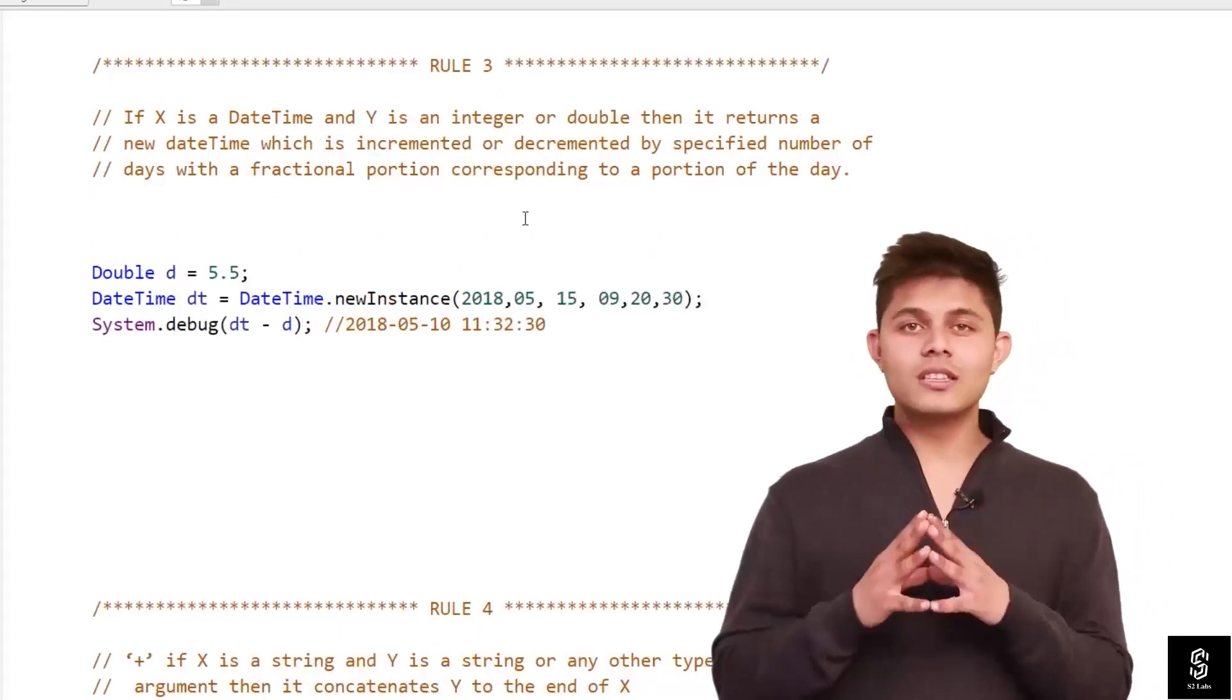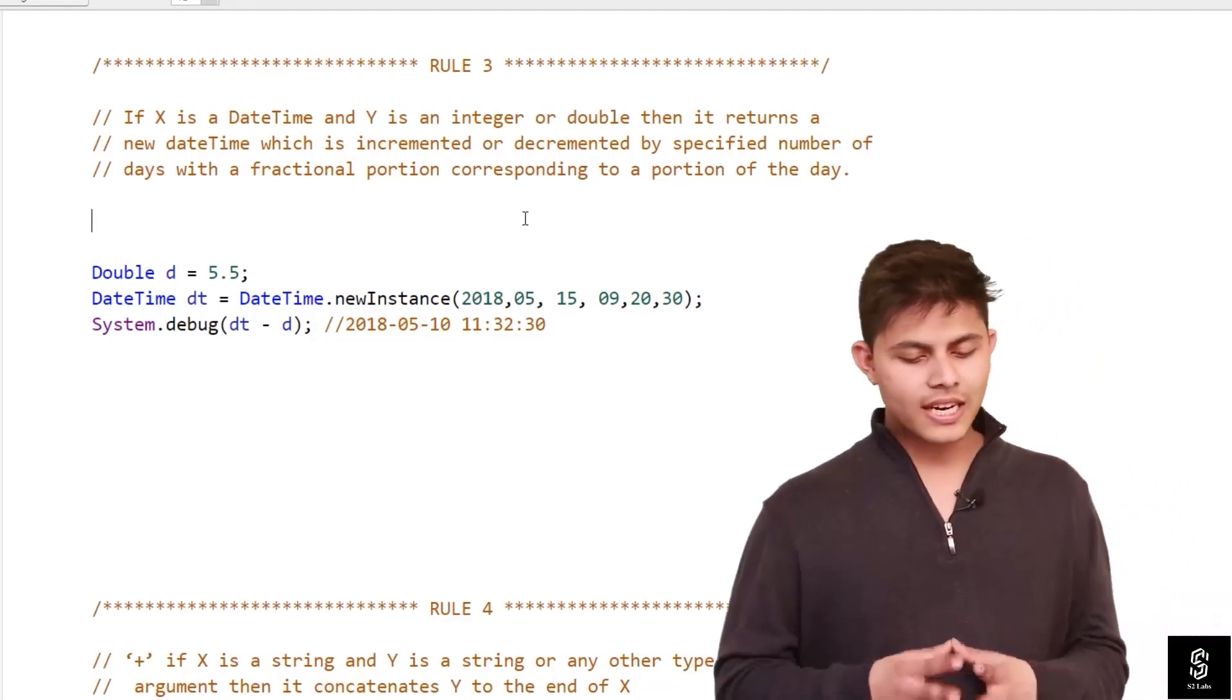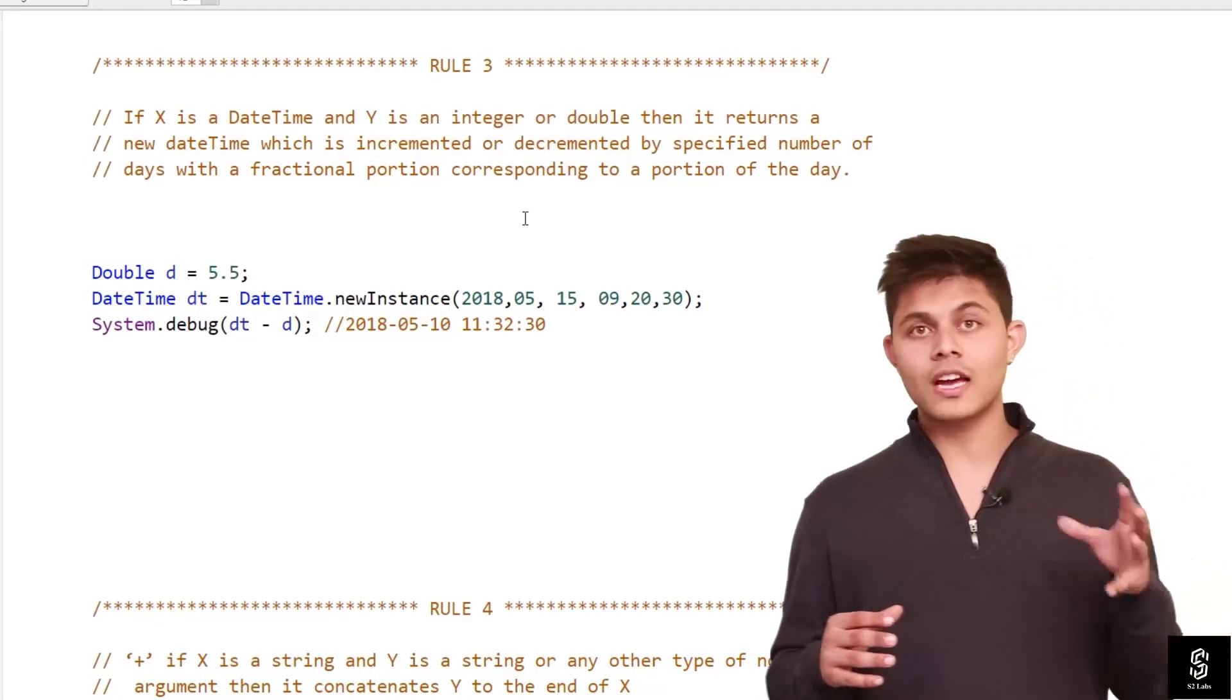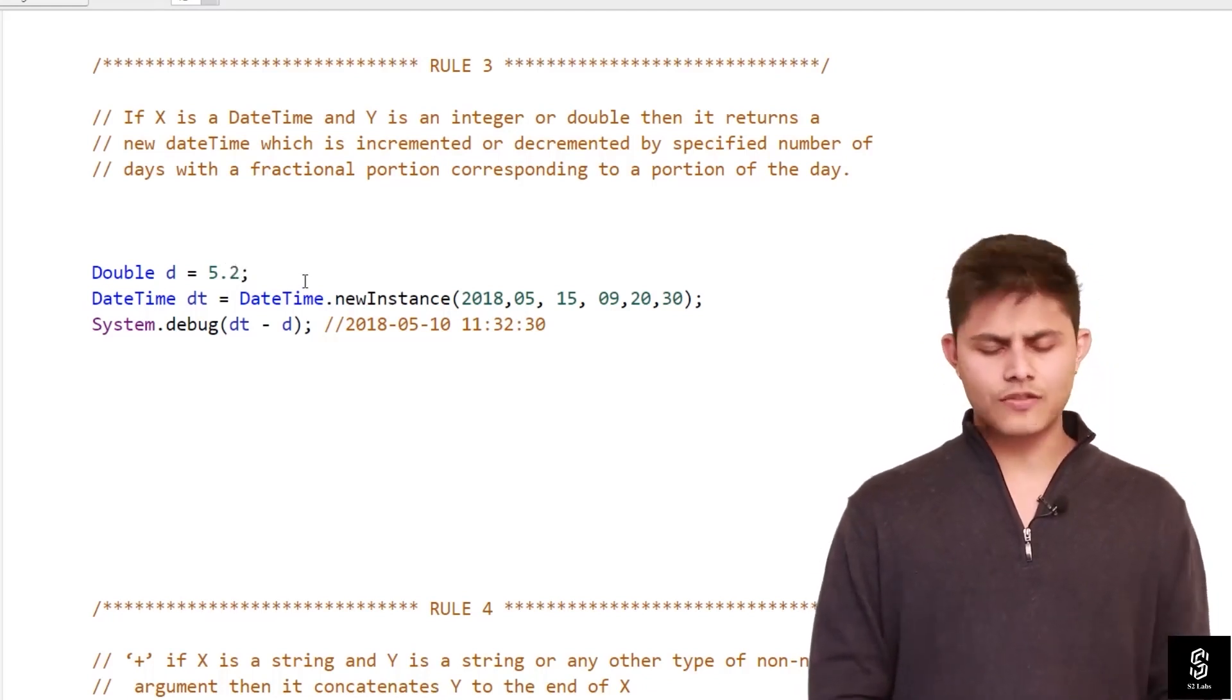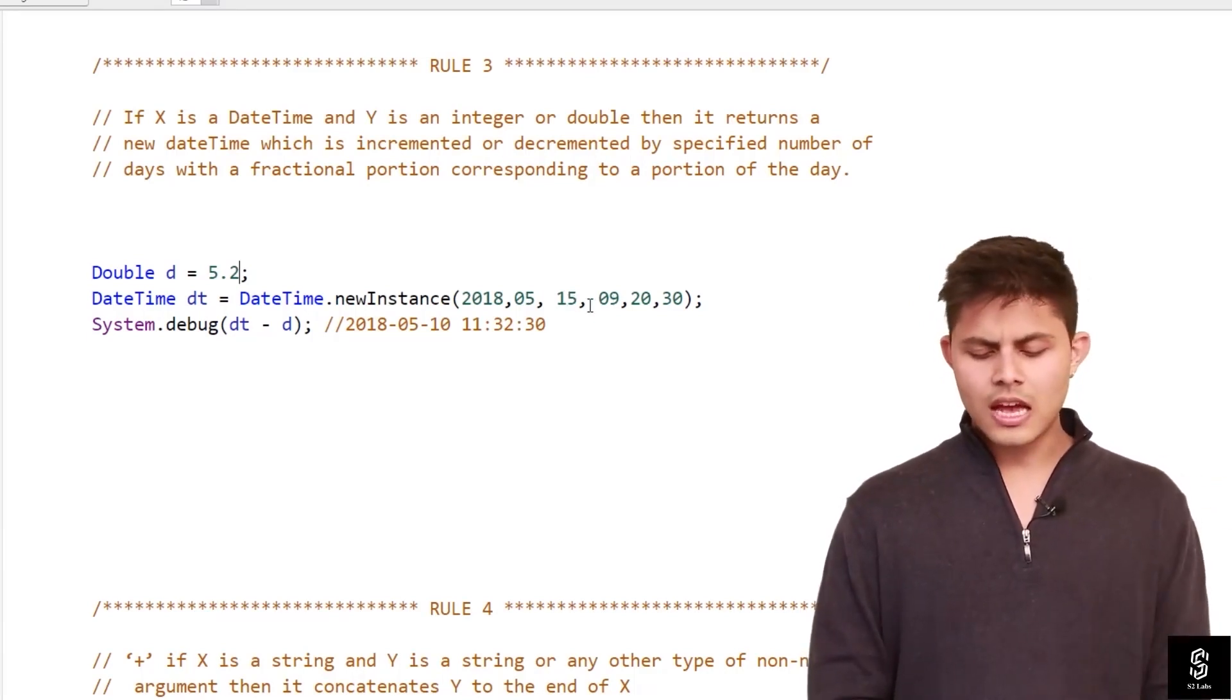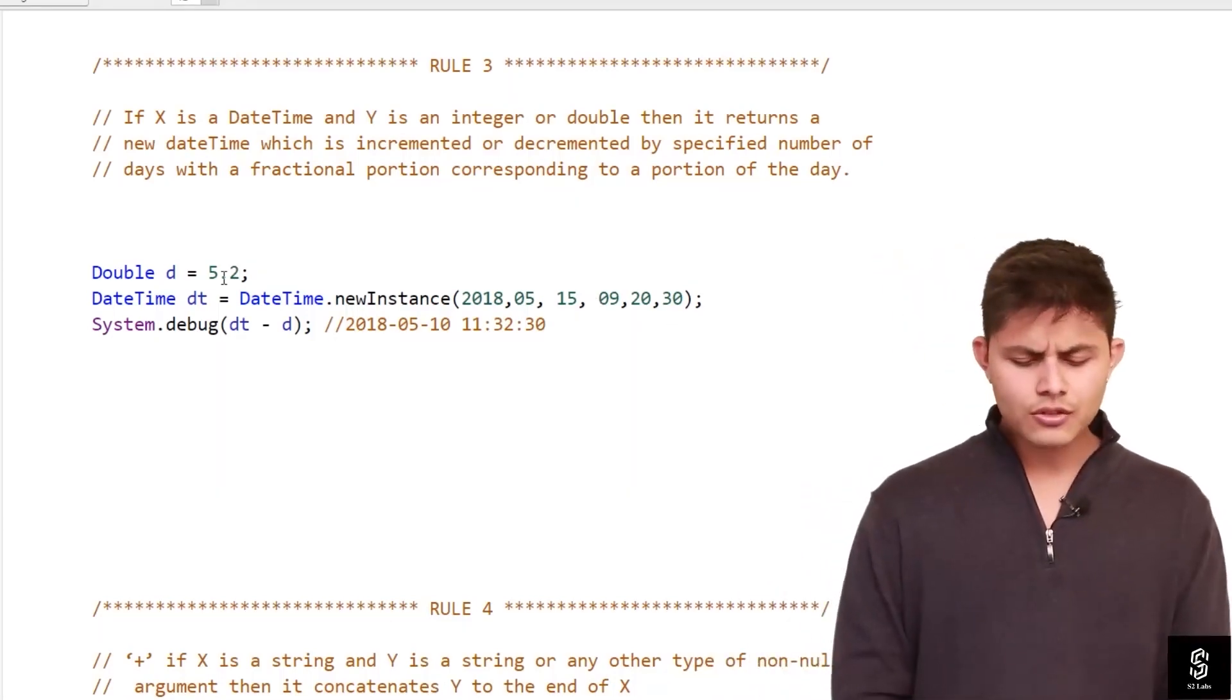Now let's talk about rule 3. Rule 3 says if x is a datetime and y is an integer or double, then it returns a new datetime which is incremented or decremented by the specified number of days with a fraction portion corresponding to the portion of the day. Let me explain what's happening here. I've got double D set as 5.2, and I've got a datetime variable set to 2018 May 15, with the time as 9 hours 20 minutes and 30 seconds. If I'm going to reduce 5.2 from it, then in that case...